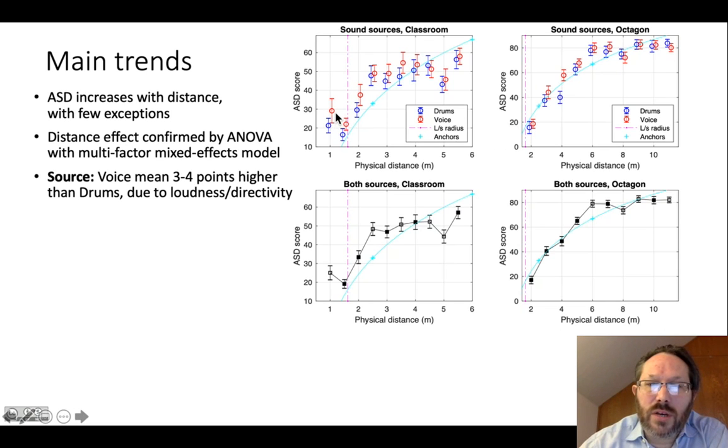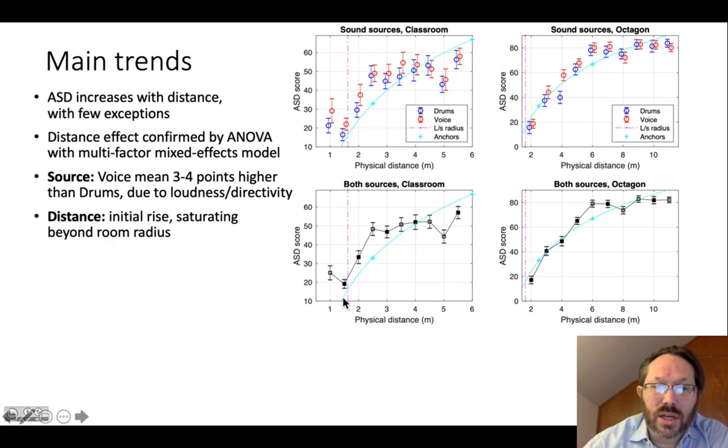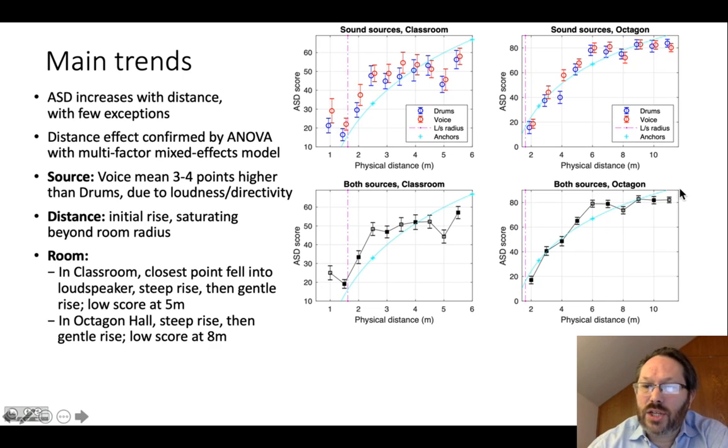In terms of source, we saw that the voice was three to four points higher than the drums, which is perhaps due to some loudness prior or directivity effect in the recording. With the distance, we saw, in general, an initial rise that tended to saturate further beyond the room radius. And looking in a bit more detail in each of the two rooms, in the classroom, we have this anomalous point where this virtual source at one meter was, in fact, closer than the physical loudspeaker positions in the reproduction setup. And so it looks as if it collapsed onto the physical loudspeakers. But in the other cases, we have this steep rise of the perceived distance and then a gentler rise with a low score here at five.